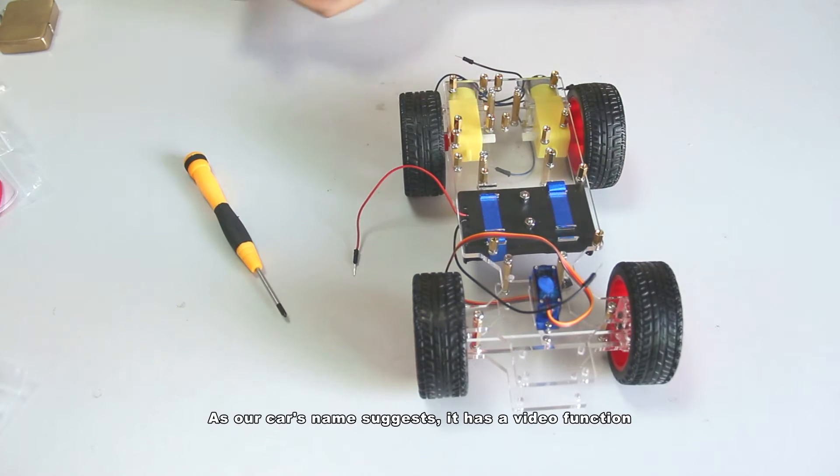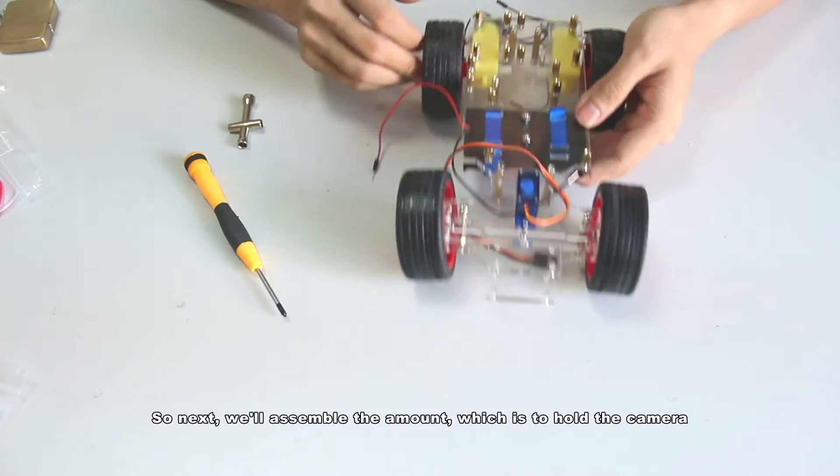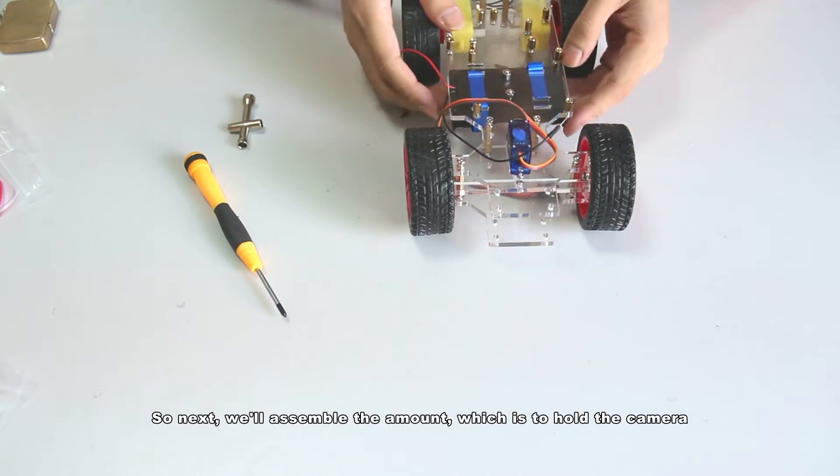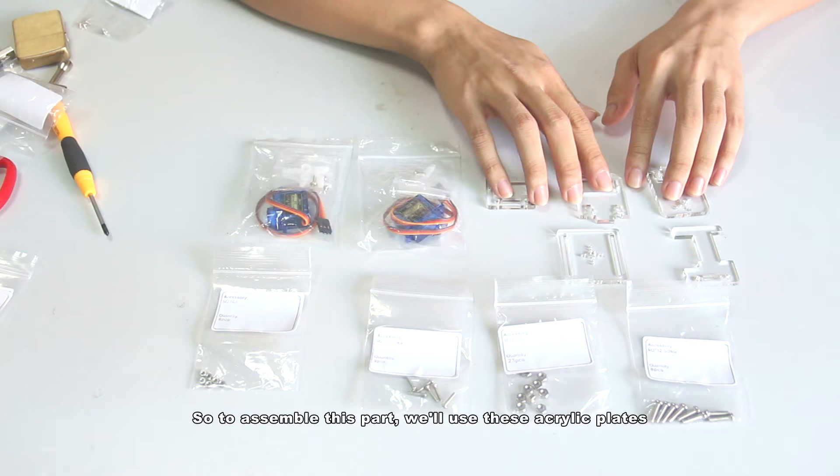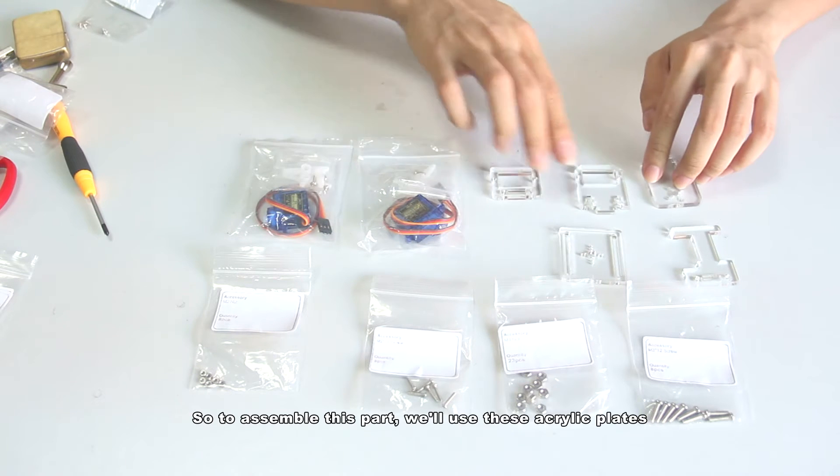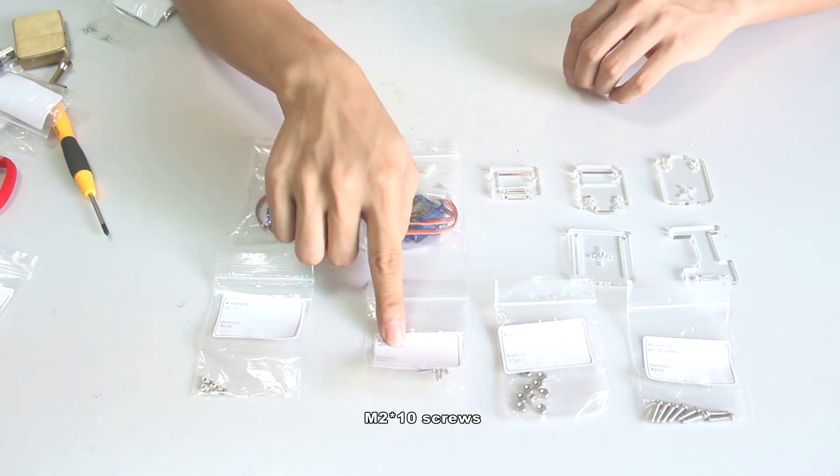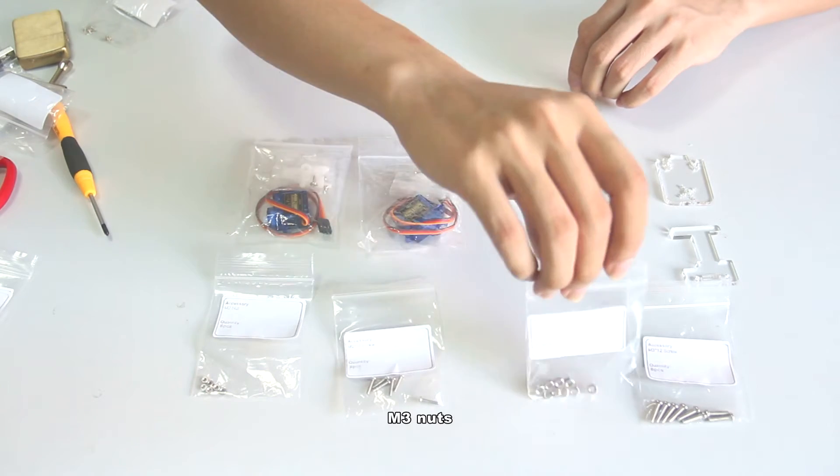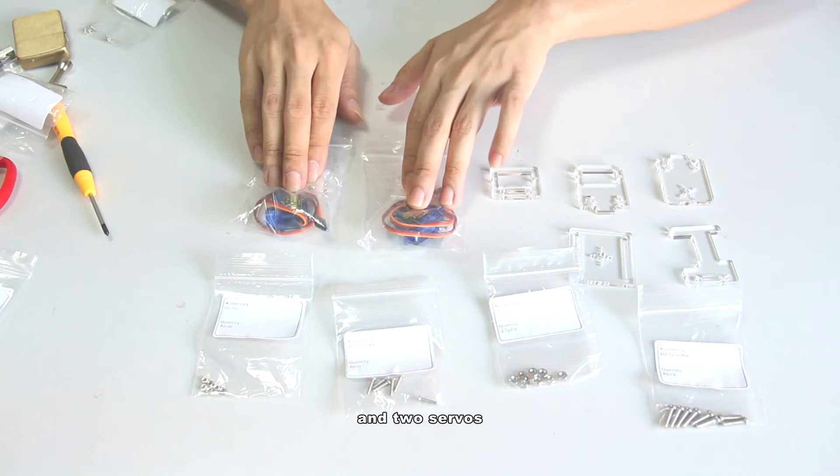As our car's name suggests, it has a video function. So next we'll assemble the mount, which is to hold the camera. To assemble this part, we'll use this acrylic plate, M2 nut, M2x10 screws, M3 nut, M3x12 screws, and two servos.